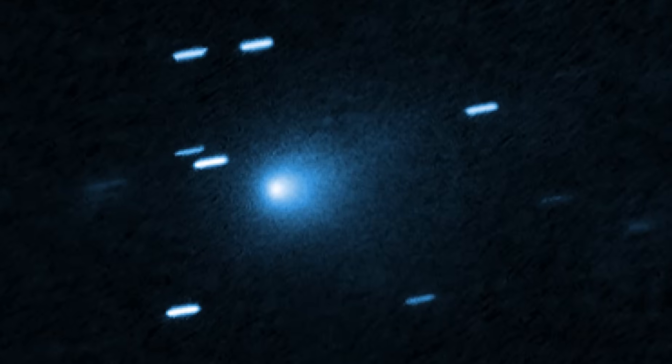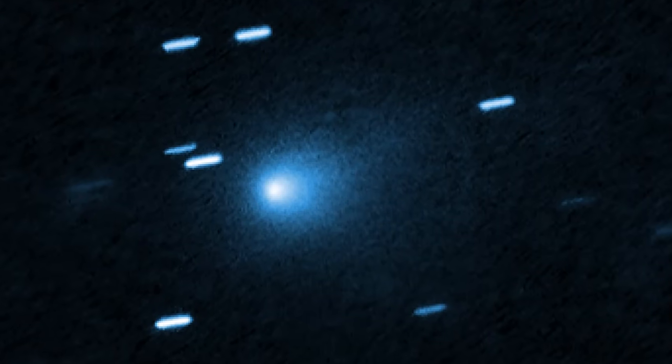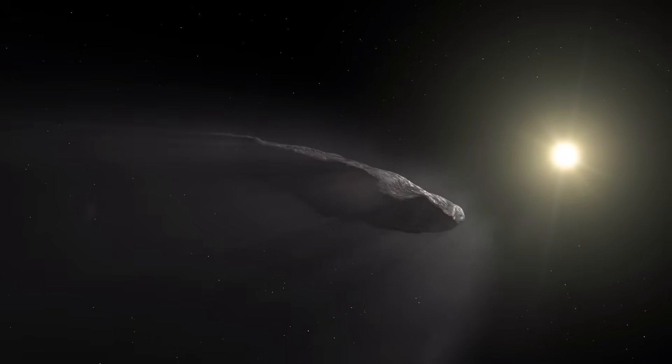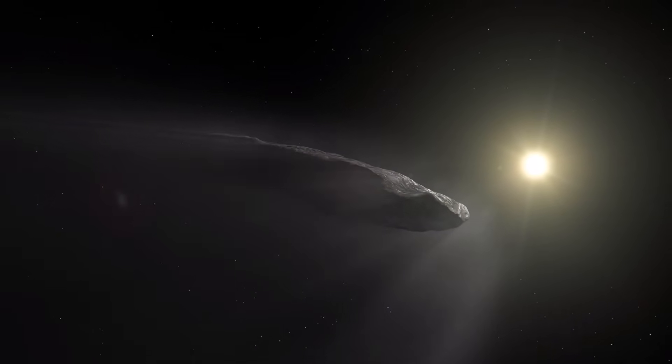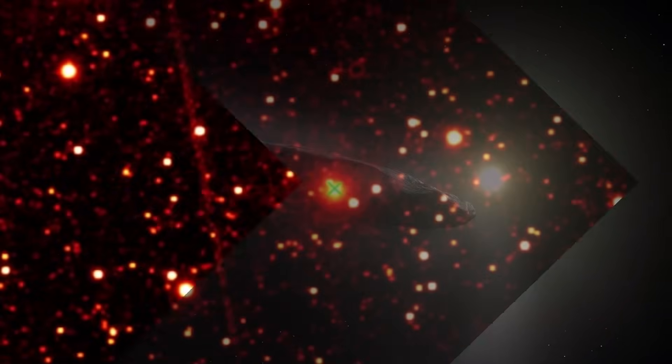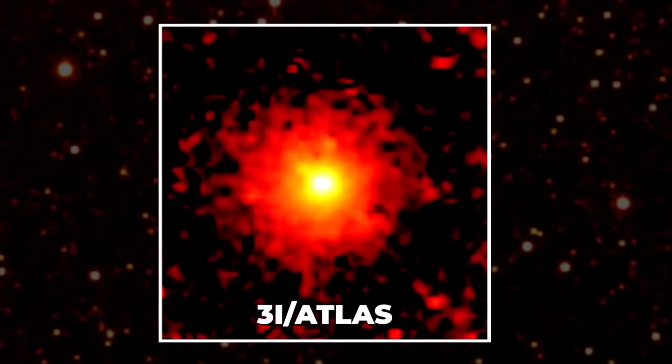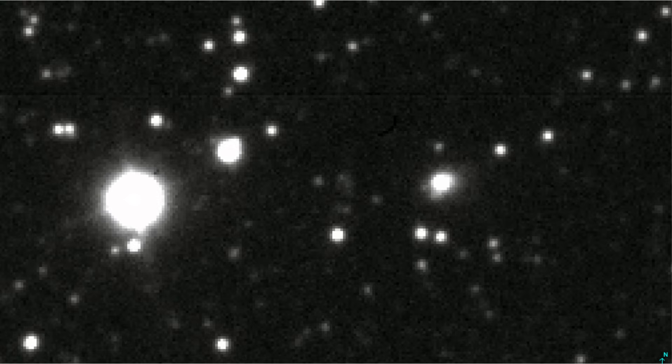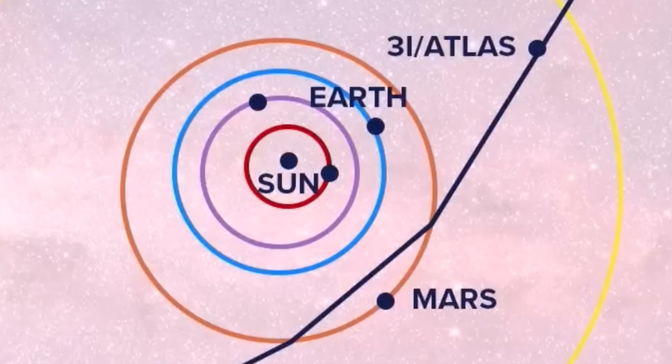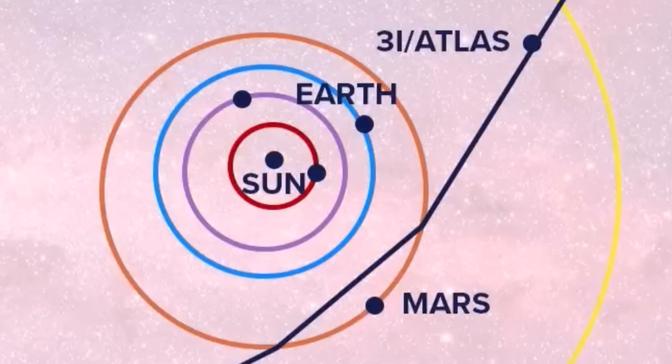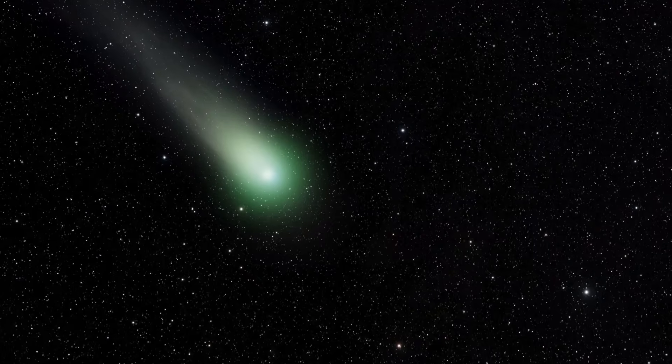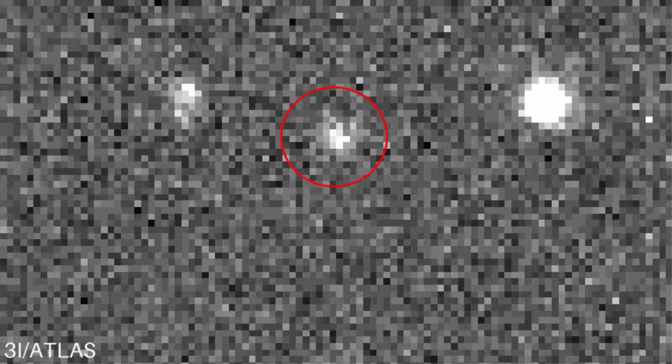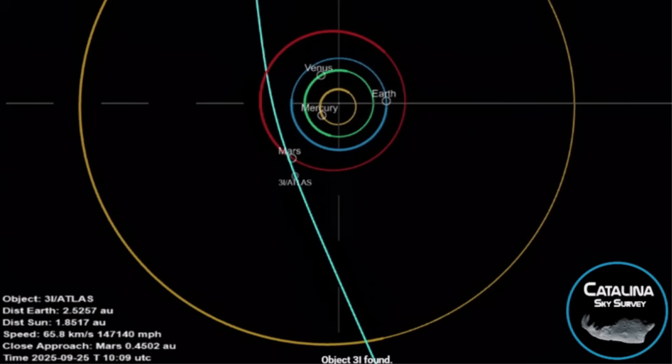But that's not even the strangest part. Its orbit is almost perfectly flat. It is aligned with the orbital plane of Earth and the other planets, known as the ecliptic. The deviation is less than five degrees. The statistical probability of an interstellar object arriving on a retrograde path, yet matching our solar system's flat plane so perfectly is just 0.2%. It's not just driving the wrong way down the highway. It's doing it perfectly in the center of the lane. This is a trajectory of impossible precision.